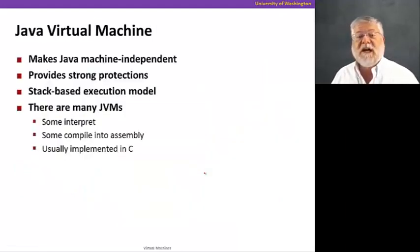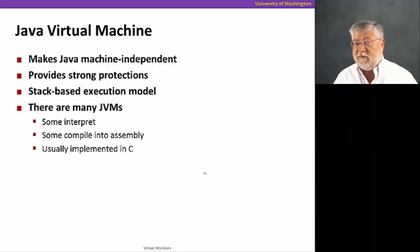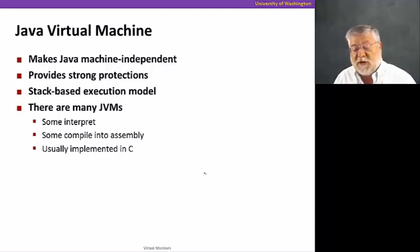Let's focus on the Java Virtual Machine. As we said, this is what makes Java more machine-independent than some other languages. The Java Virtual Machine also provides some very strong protections for the language that sort of keep programmers out of trouble, unlike C, which lets us run amok and do anything we want with memory and references into that memory.